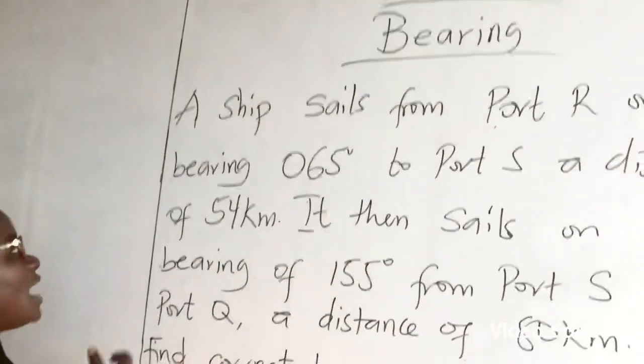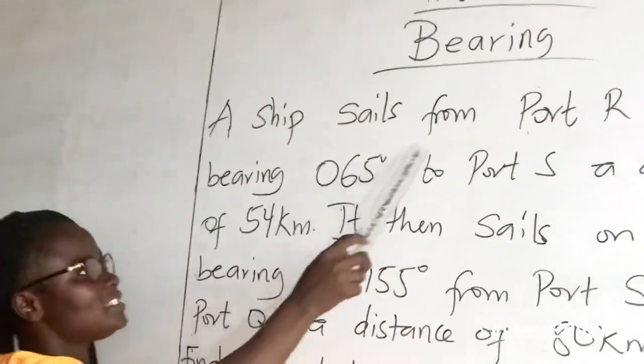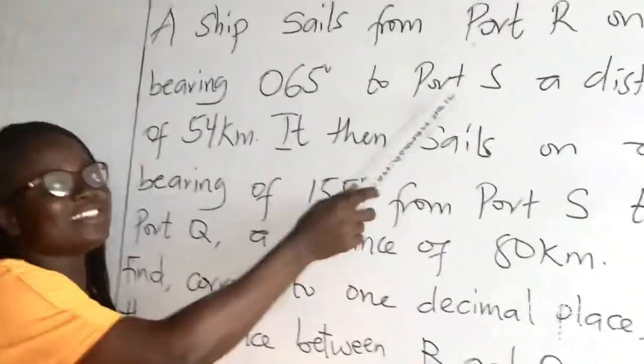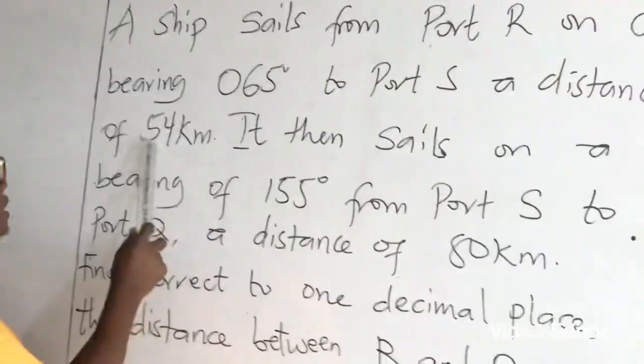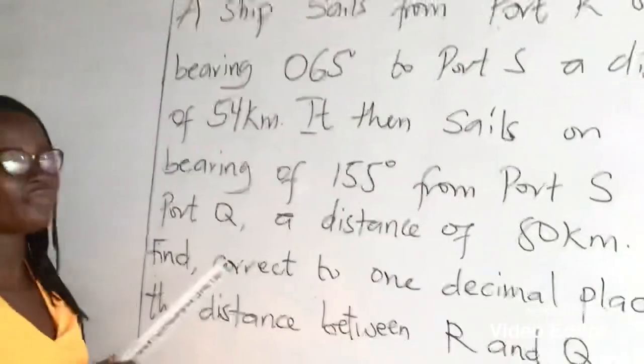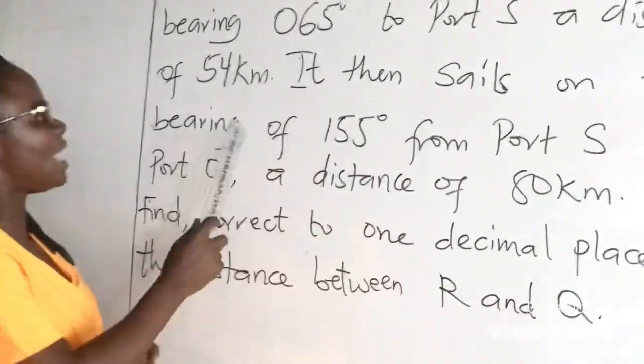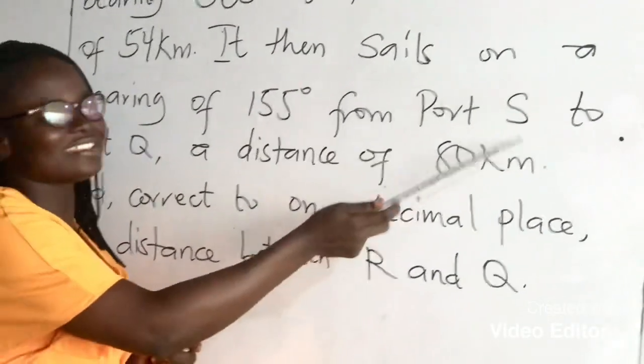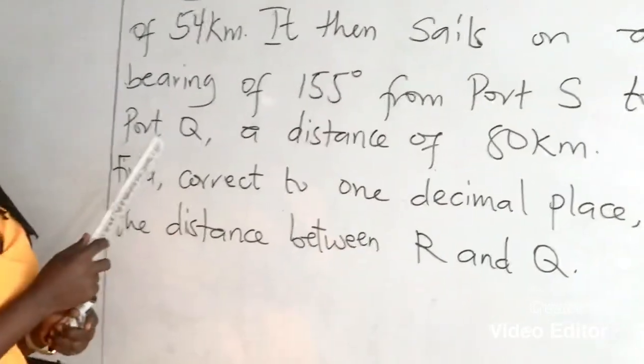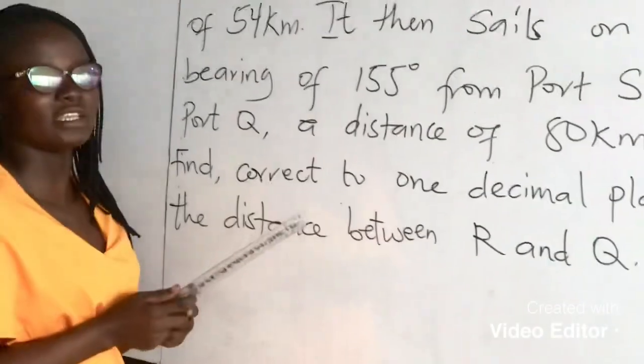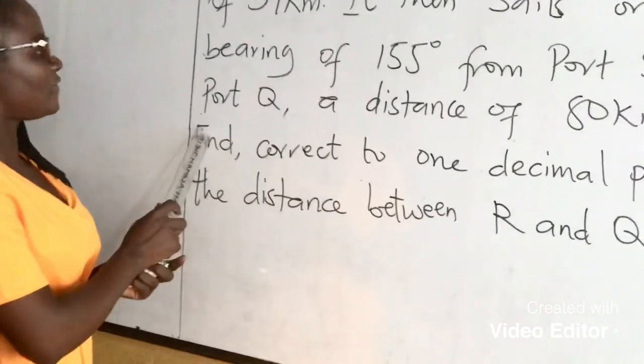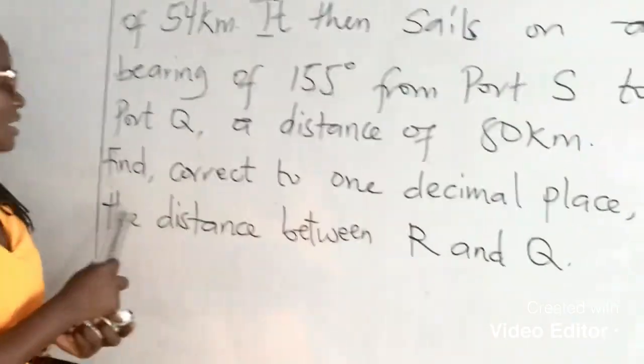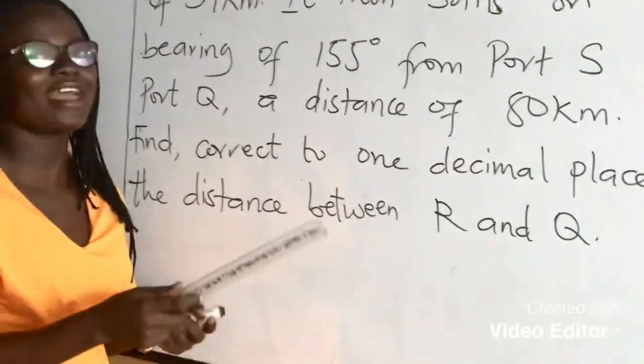The first we have here is a ship sold from Port R on a bearing of 065 degrees to Port S, a distance of 54 kilometers. It then sails on a bearing of 155 degrees from Port S to Port Q, a distance of 80 kilometers. Find, correct to 1 decimal place, the distance between R and Q.